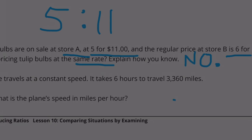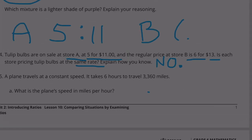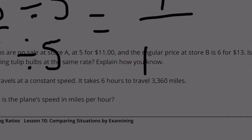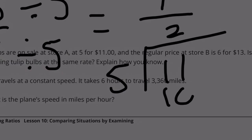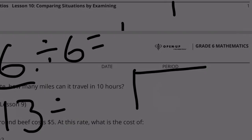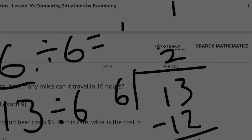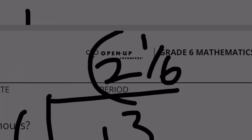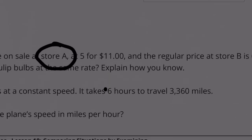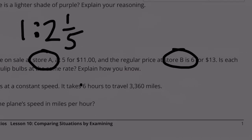I'm going to say no. 5 to 11 ratio, that's store A. Store B is a 6 to 13 ratio. Store A sells tulips at a rate of 1 to 2 and 1/5th. And store B has a ratio of 1 to 2 and 1/6th.